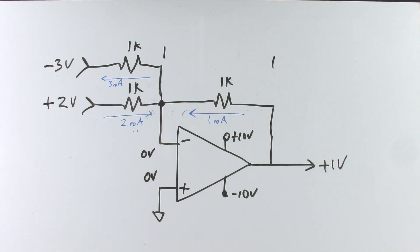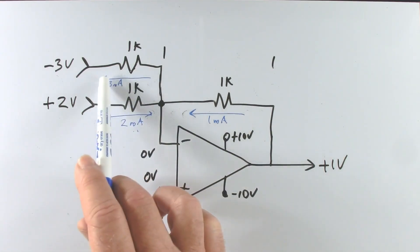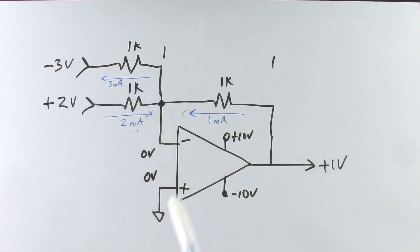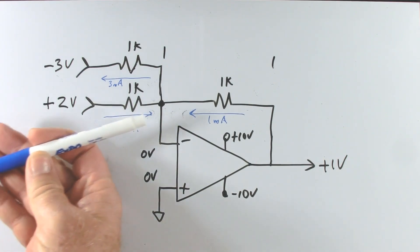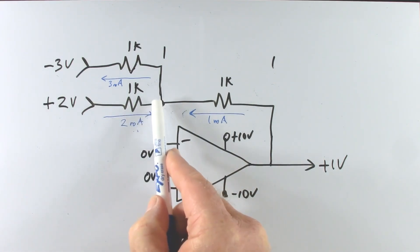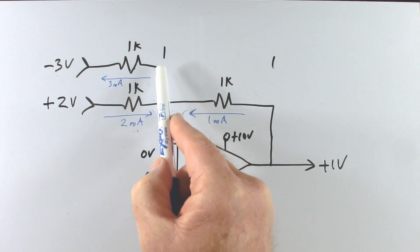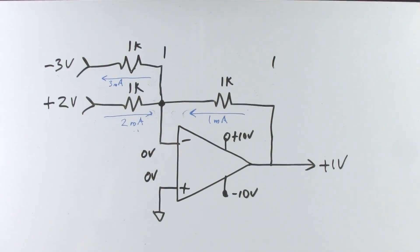This might look a little bit confusing because, wait a second, where's that 3 milliamps coming from if we only have 1 milliamp coming out of the amplifier? Well, that doesn't matter. What we see is the node here, Kirchhoff's current law, we see 1 milliamp flowing in this way, 2 milliamps flowing in this way. Those 3 milliamps go into the node and all flow back out through that input. So the circuit works as expected.